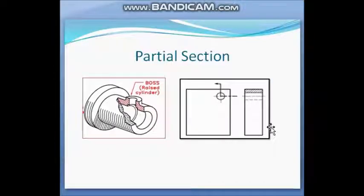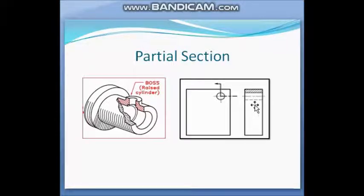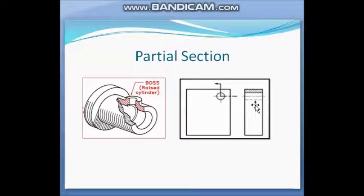Next is partial section. Partial section is drawn on a small portion of the object. This is the total object and we have drawn the section on only a little portion. There is no need for hatch line on the full object — the hatch line indicates only this small portion. Partial section is sometimes called broken out section.